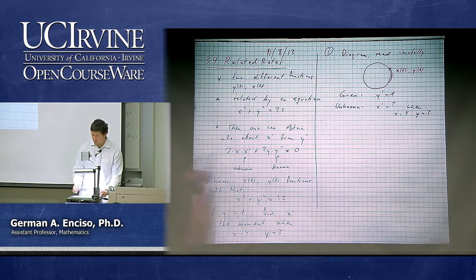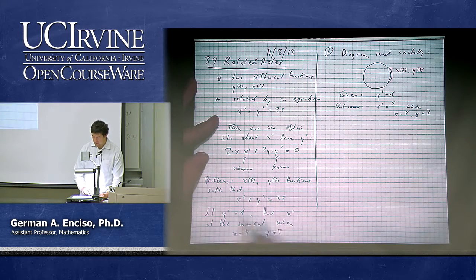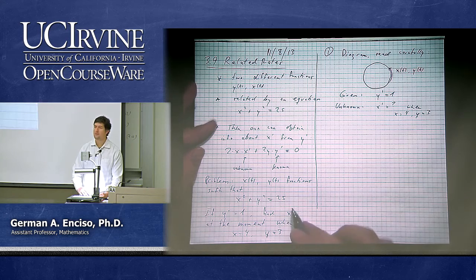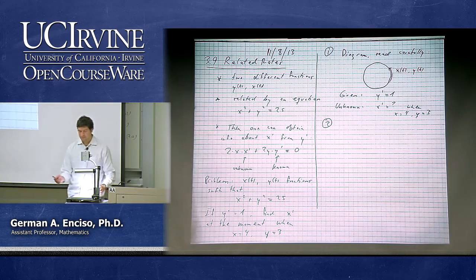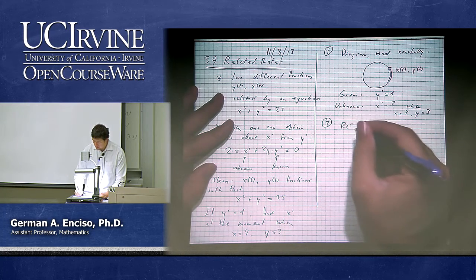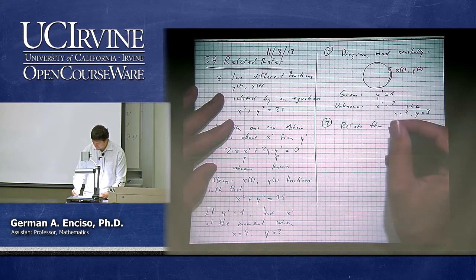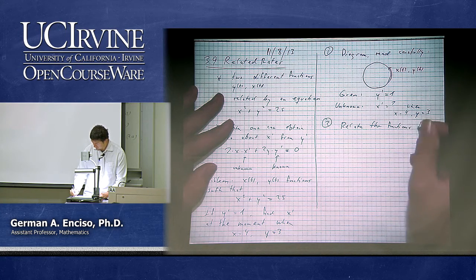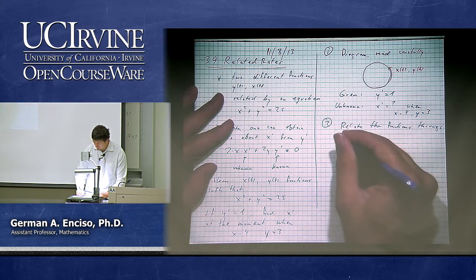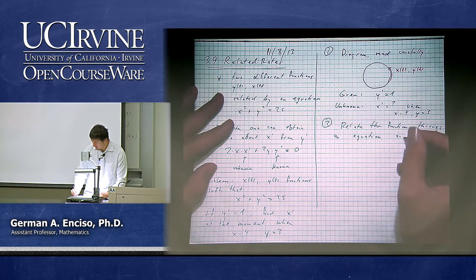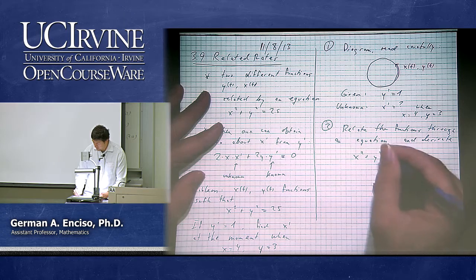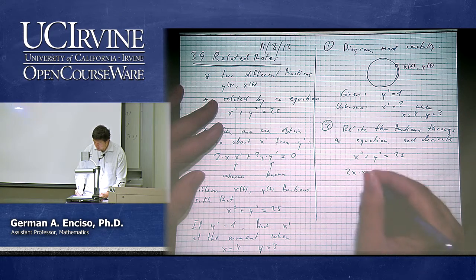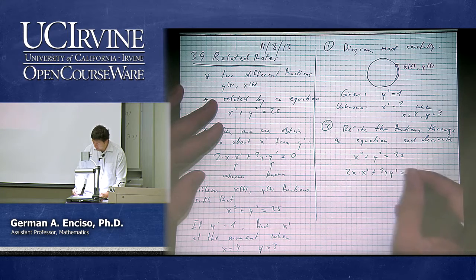Just for verification: if x equals 4 and y equals 3, does it satisfy this equation? 3 squared plus 4 squared is 25 — it better be 25. Now, relate the functions through an equation and differentiate. In this case we simply have x squared plus y squared equals 25. Differentiating on both sides gives 2x times x prime plus 2y times y prime equals zero. The y prime term is known, and x prime is unknown.